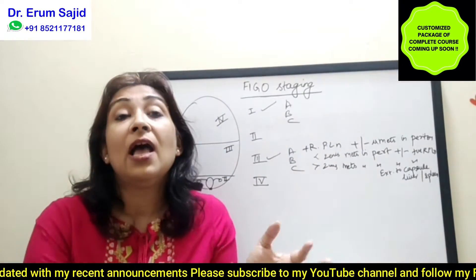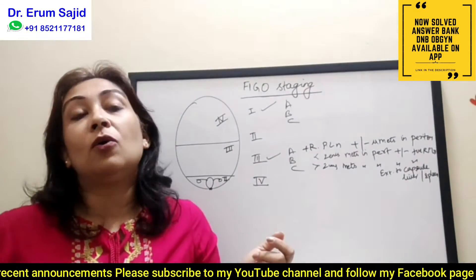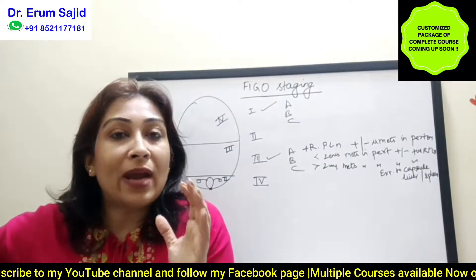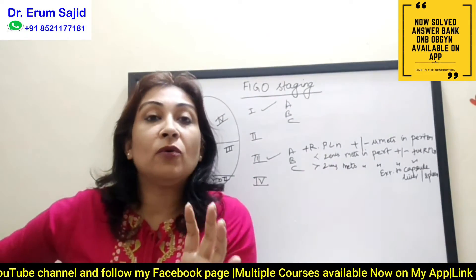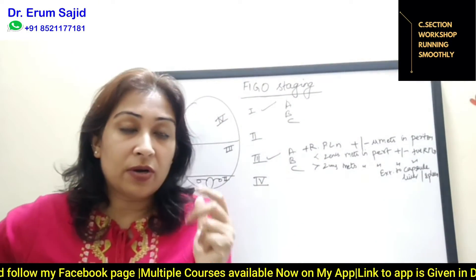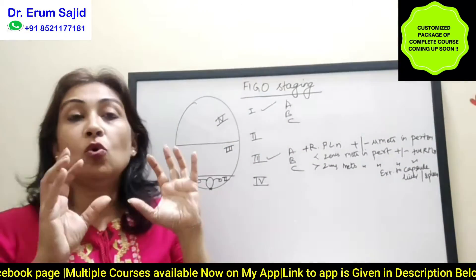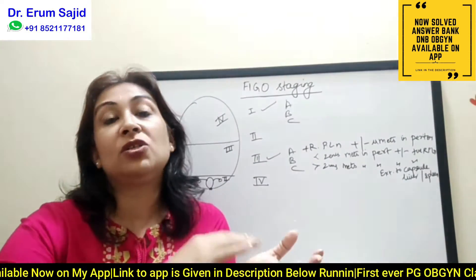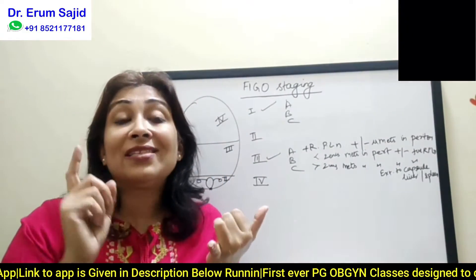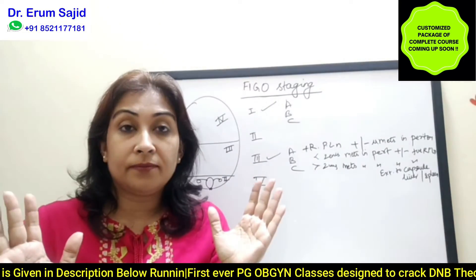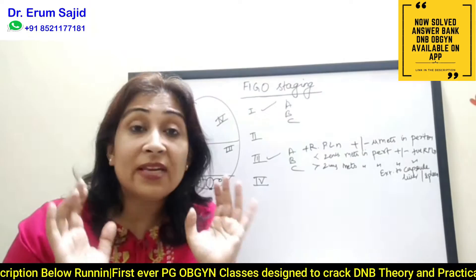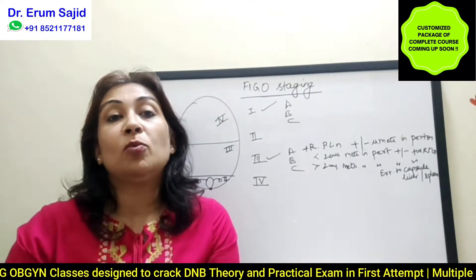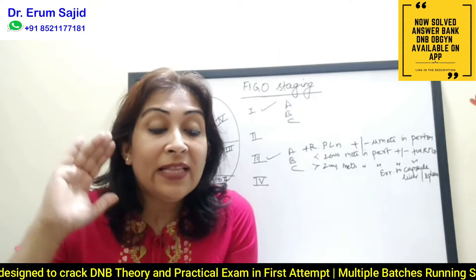Let's begin with ovarian carcinoma staging. Stage one — always remember — is limited to the ovaries, one or both. The capsule may be intact or breached. One more important thing: positive ascitic fluid is still stage one if nowhere else is involved. Peritoneal cytology positive is stage one C, which I'll explain later. Stage one means limited to the ovaries, and at maximum it has gone to the peritoneal fluid, because that is the mode of spread of ovarian carcinoma.